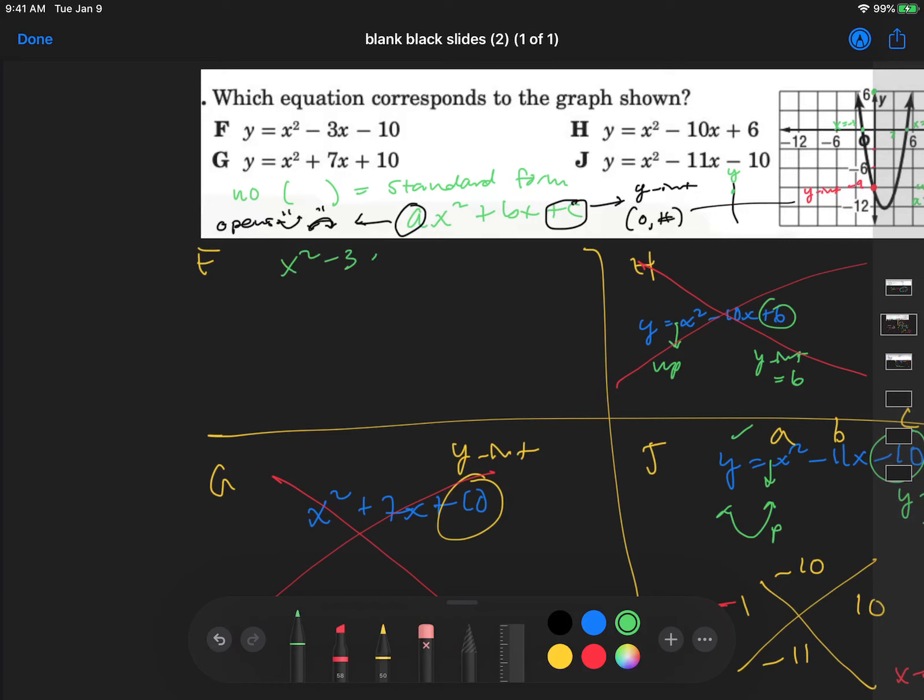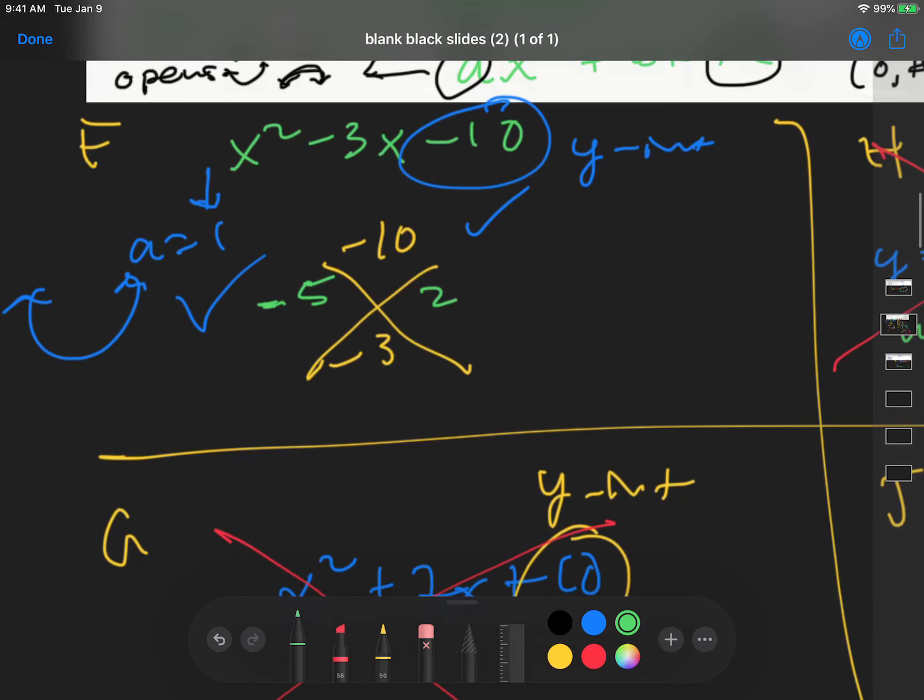x squared minus 3x minus 10. We have a y-intercept of negative 10. So that matches. My graph here, my a value is 1. So this is positive, so it's going to open up. So that's good. Let's see if we can factor this and see if we can find the x-intercepts. A times c is negative 10. My b value is negative 3. Two numbers that multiplied to be negative 10 are 5 and 2. And if I make this 5 here negative, negative 5 times 2 equals negative 10. Negative 5 plus 2 equals negative 3. So this is good. We can have an answer that looks like this.